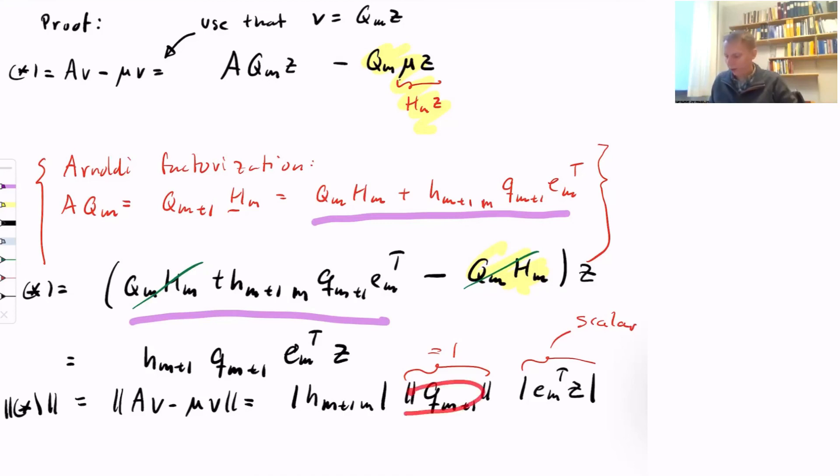The last step of the proof consists of just taking the absolute value or the norm of the residual. We use that Q_M+1 is a column in the Q matrix, so its norm is equal to 1, and we don't need to take a norm here—we can just take absolute value. So we really have equality, and the residual equals H_M+1,M e_M^T z, which is exactly what we wanted to show with this theorem.